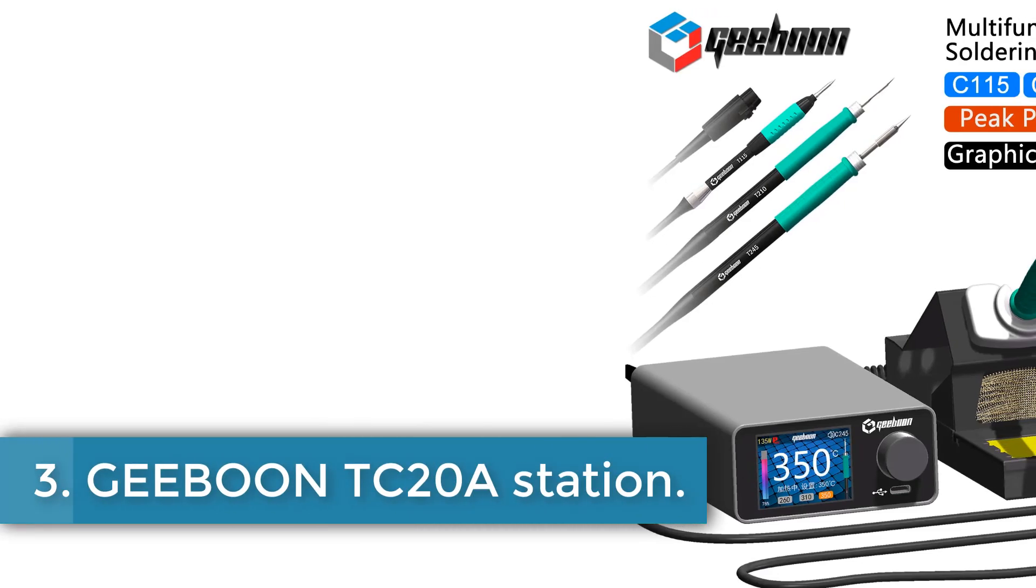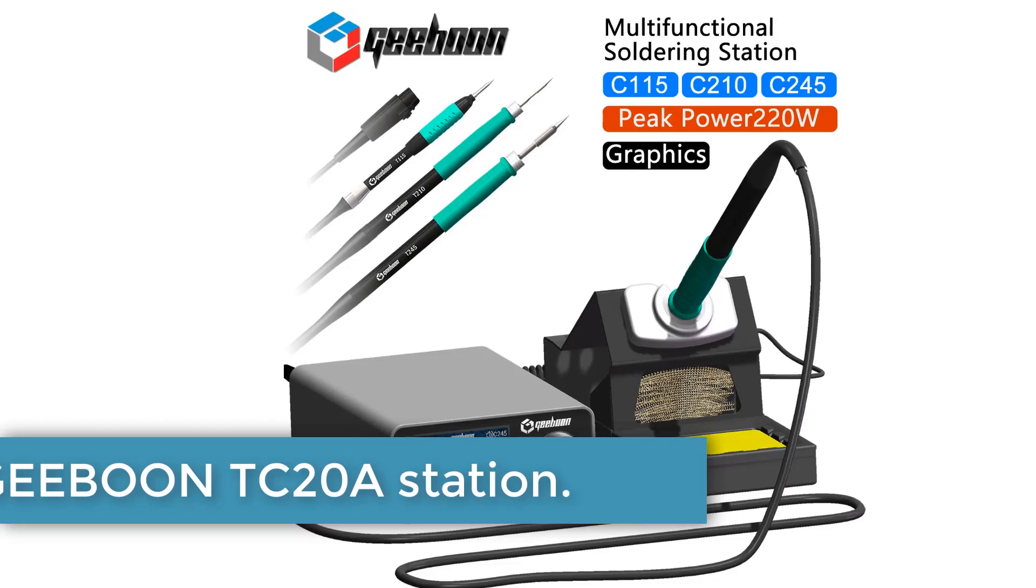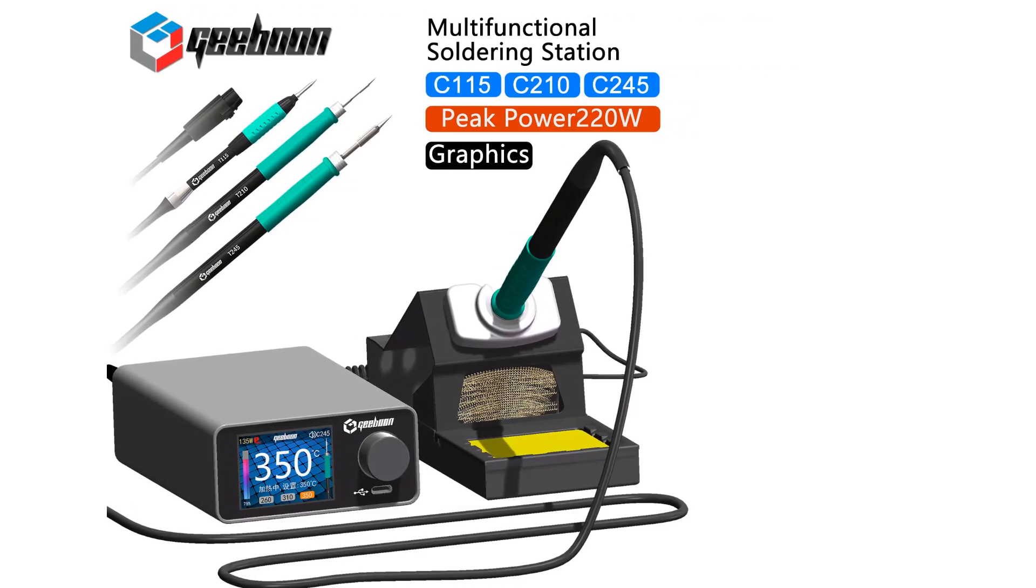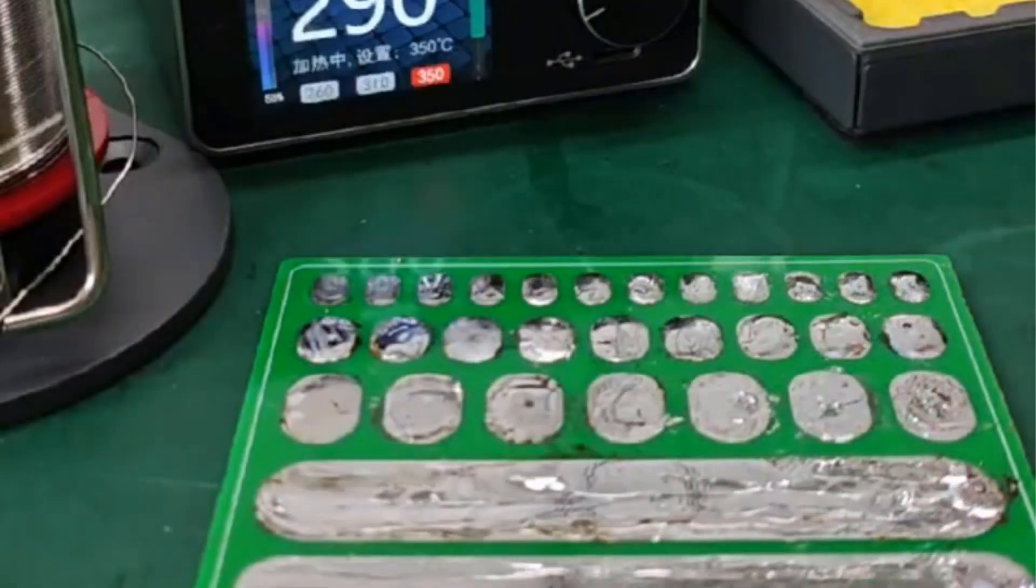Number 3: Gibun TC20A Station. The TC22 is an enhanced version of the TC20 soldering station, featuring significant circuit improvements for greater efficiency and reliability.